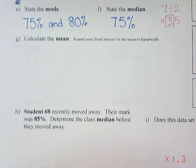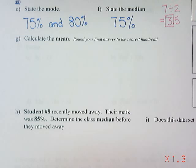Here it says to calculate the mean and round your final answer to the nearest hundredth. We often need to round when doing the mean because when we divide by the number of numbers, it doesn't always divide evenly. In order to calculate the mean, we take all of our numbers, add them together, and then divide by the number of numbers.